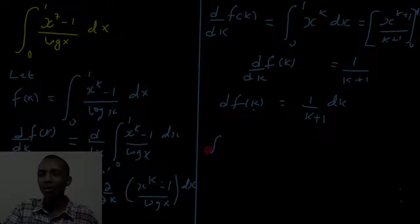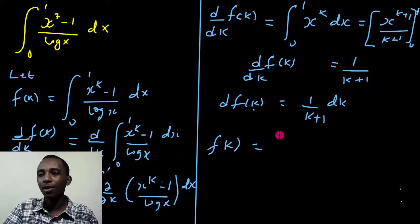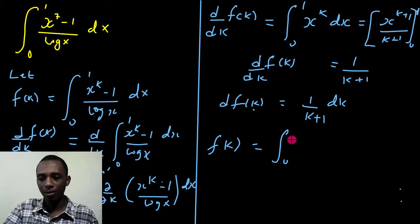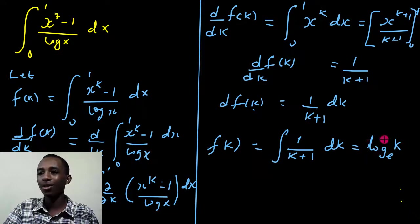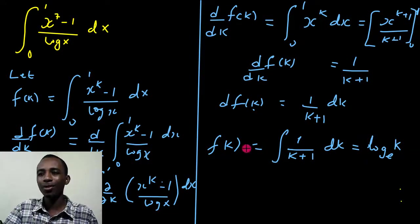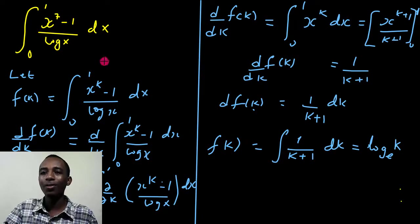So I'll have f of k now is going to be equal to the integral of 1 divided by k plus 1 with respect to k, which basically gives me log k. Okay, that's to base e, or I could have used the natural log there. All right, plus a constant, but I will not put the constant because I know what the value of k is.